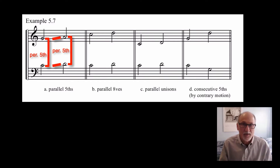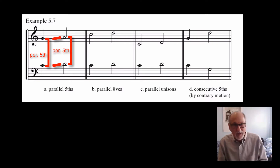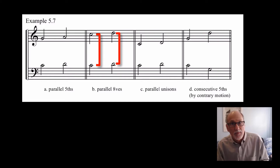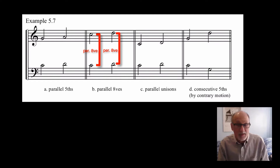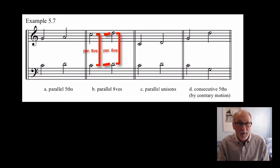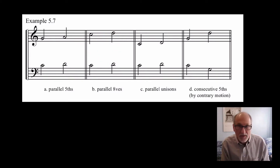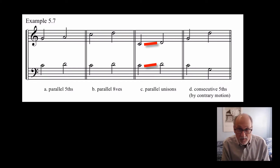And the same thing with octaves — it's just too plain of a sound. Look at the next example B, where we've got a C in the tenor and a C in the soprano, and they both move up to octaves again: D and D. The problem is those really sound like the same voice, the same melody just doubled — it's not really going to contribute much to a four-part writing style.